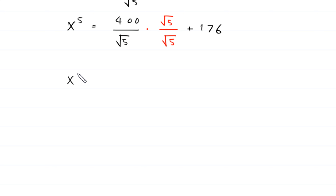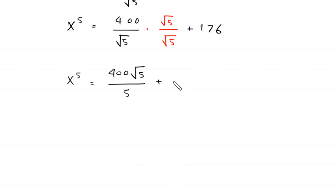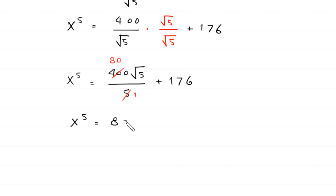So x to the power 5 equals 400 times root 5 — that is 400 root 5 — divided by root 5 times root 5, which is 5, plus 176. And 400 divided by 5 is 80, so this becomes x to the power 5 equals 80 root 5 plus 176.